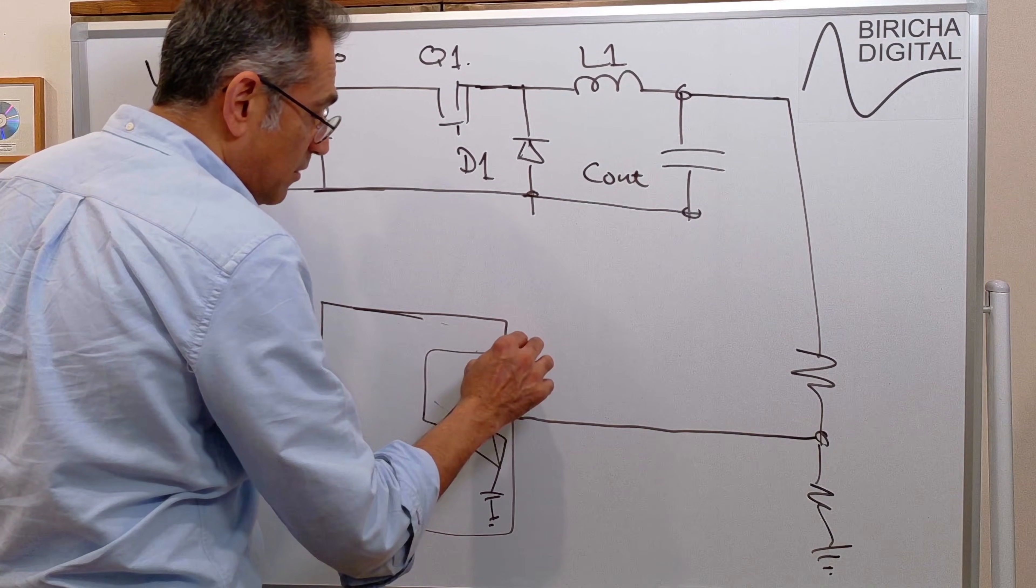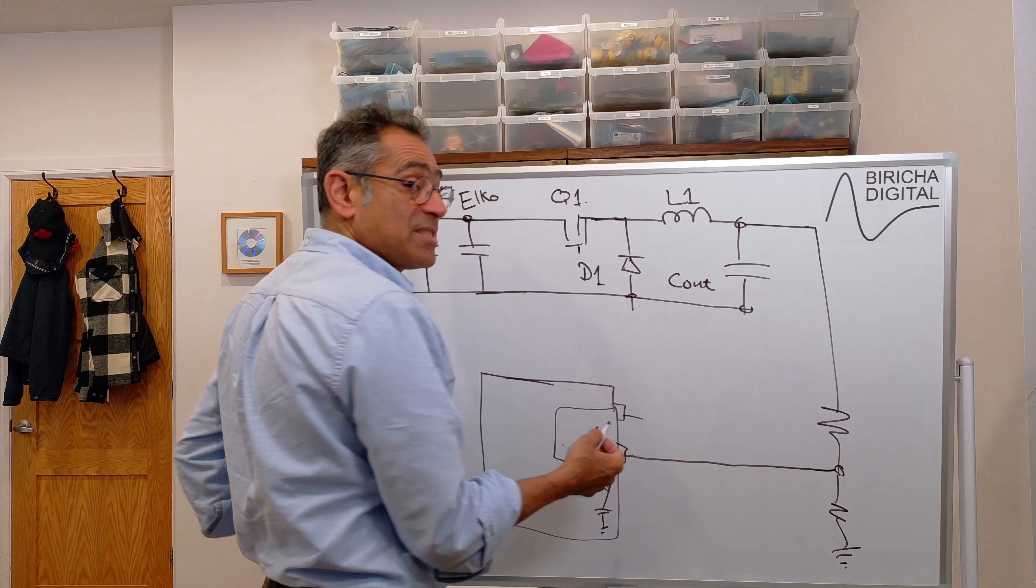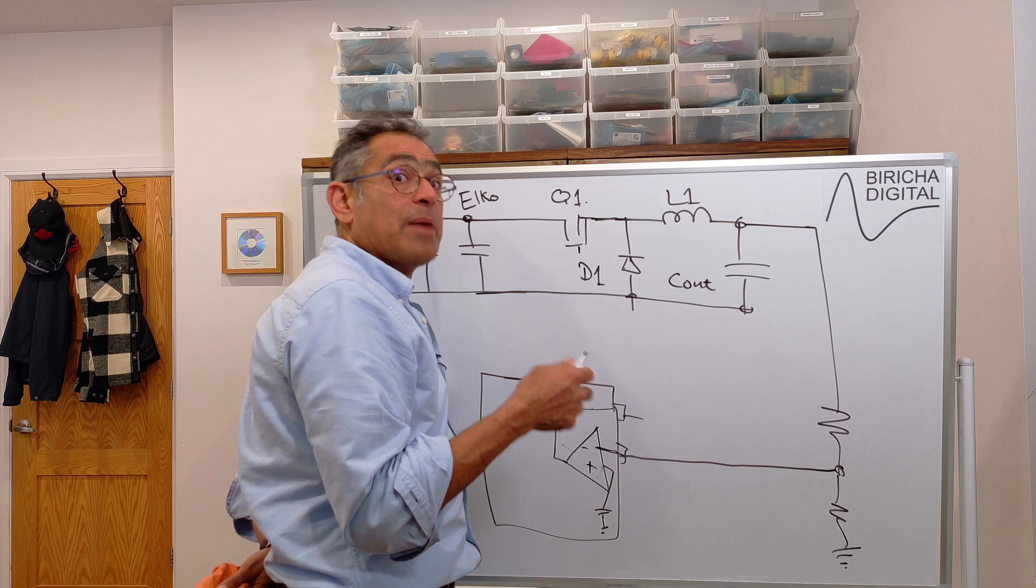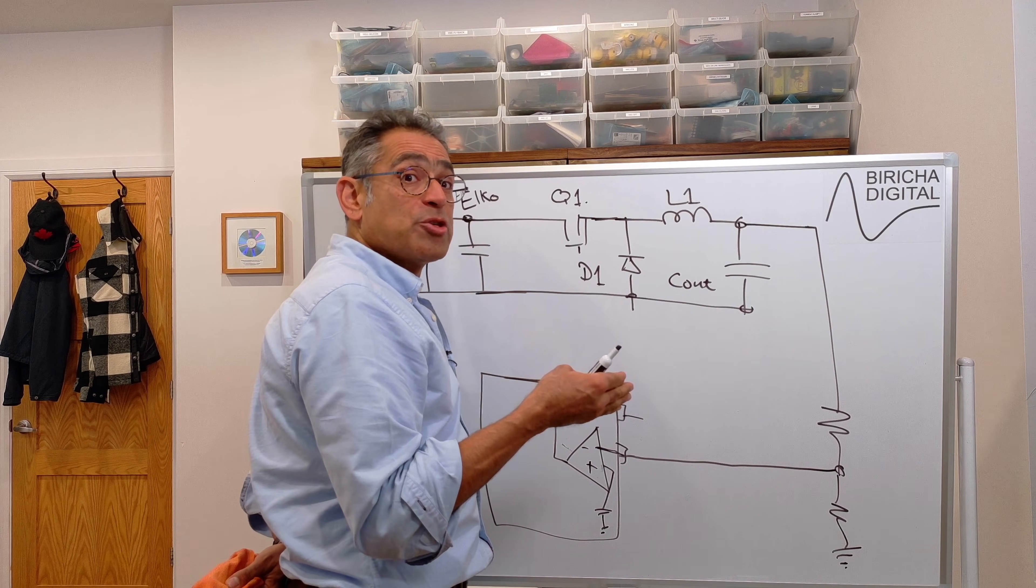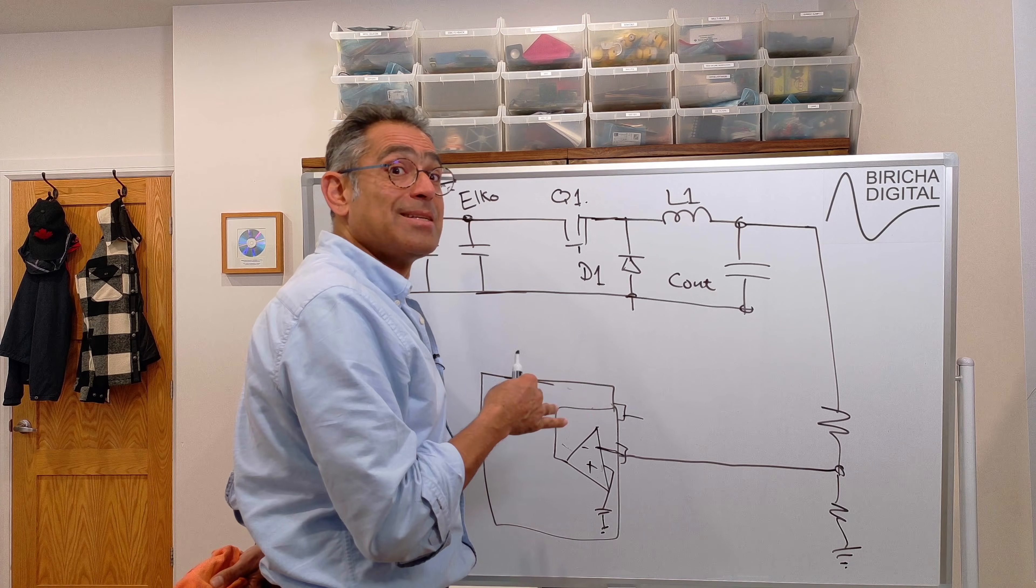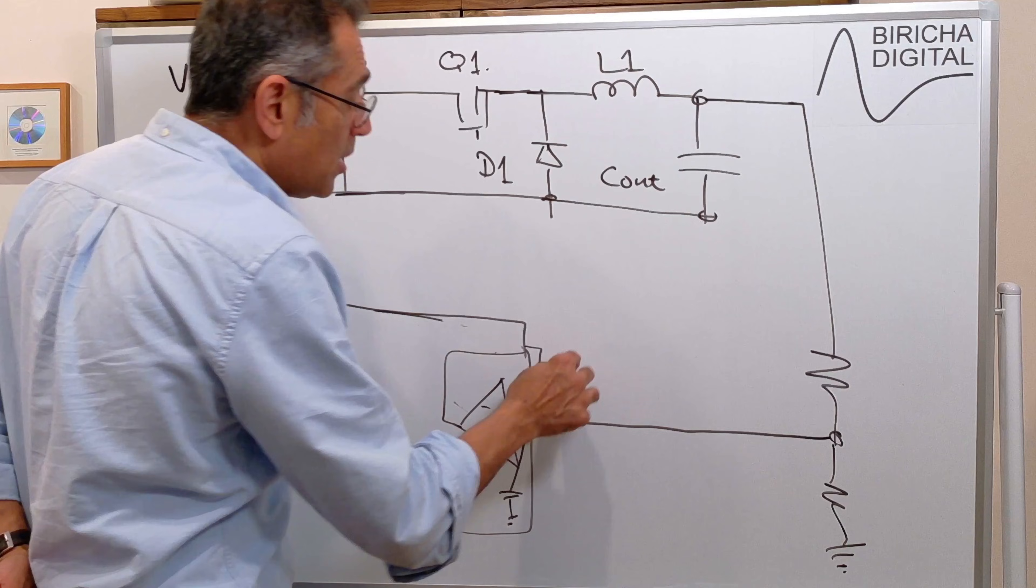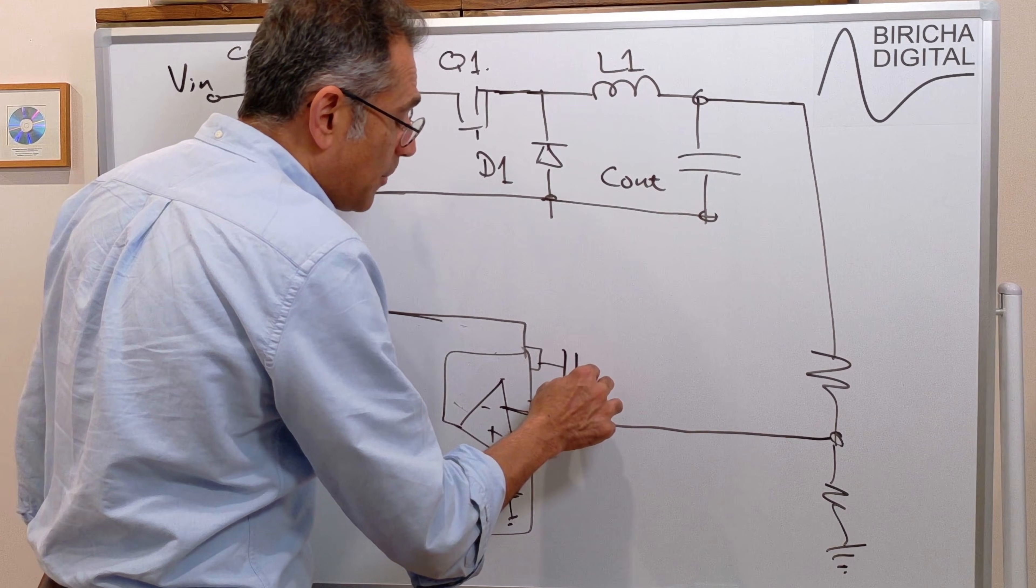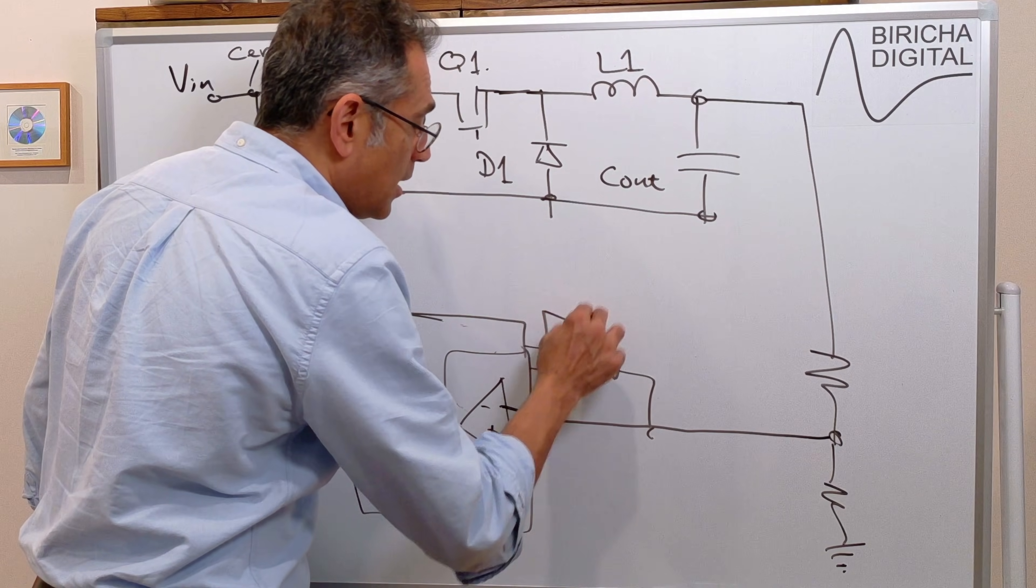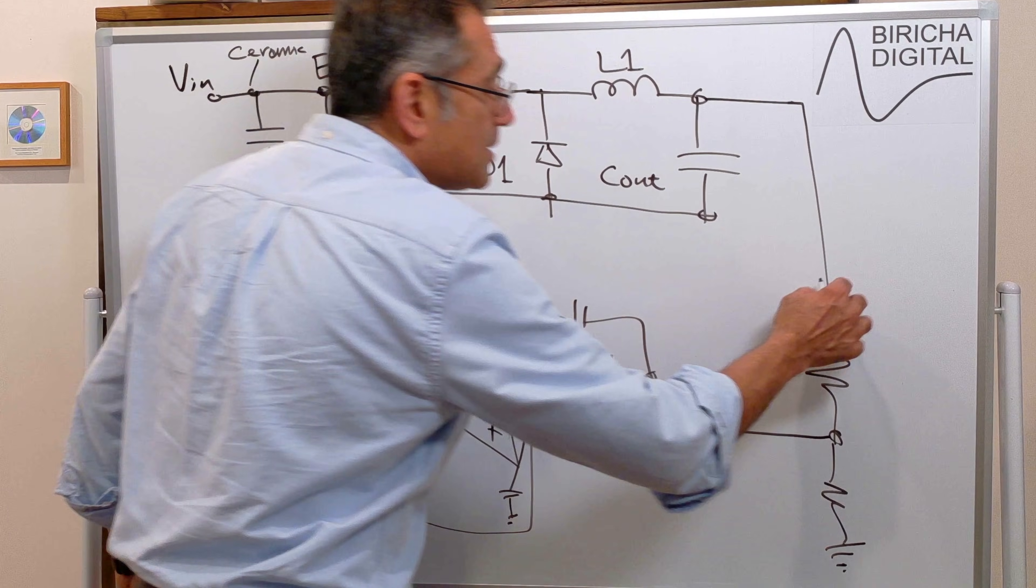And the output of this, these are the pins of the chip, will go to our compensating components, which for a buck, if you're using a voltage mode buck, will be a type 3. If you're using current mode, it will be a type 2. But again, we will discuss this in complete detail and how you select the component values in this workshop. You will have a capacitor, a resistor, another capacitor. That would be what we call a type 2 compensator.